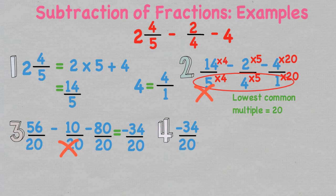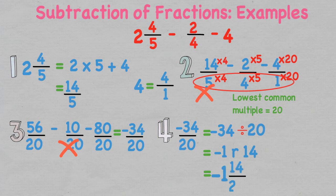We simplify this back into a mixed fraction by dividing the numerator by the denominator: negative 34 divided by 20 is negative 1 with 14 left over. Therefore the final answer is negative 1 and 14 over 20. We can further simplify this to negative 1 and 7 over 10.